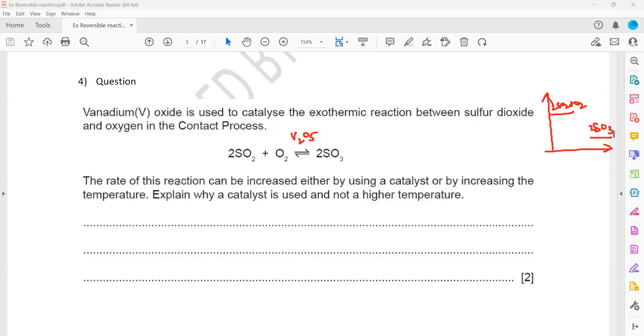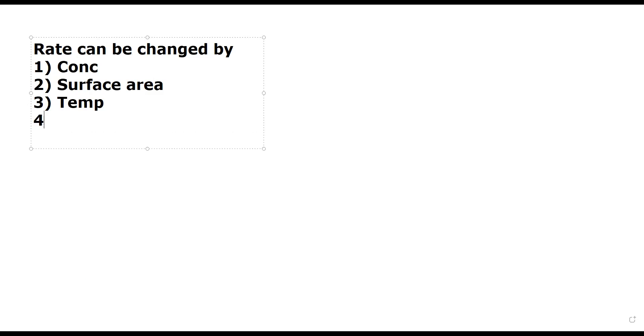The rate of this reaction can be increased. Remember what factors can affect the rate of a chemical reaction. We can change: number one, the concentration; number two, the surface area; number three, the temperature; number four, the catalyst; and number five, pressure — which is only valid for gases. These are the ways we can change the rate or speed of a chemical reaction.